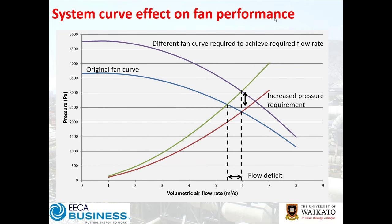Is this just theoretical, or does it really matter? Looking at our fan curve and system curve plot: if we have our design system curve in maroon and the actual system curve in green, with a required flow rate of six cubic metres a second, what happens is — with a higher actual system curve at a fixed fan speed — the actual flow delivered will be somewhat less, sitting around five and a half.